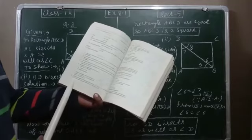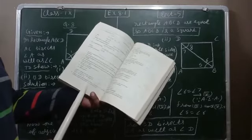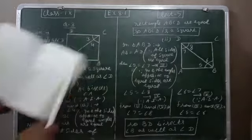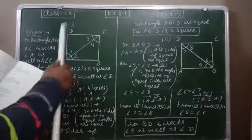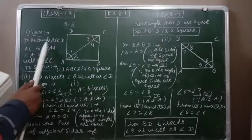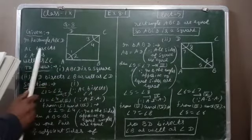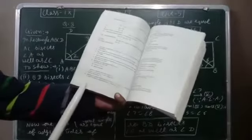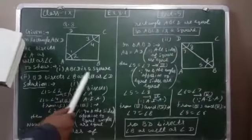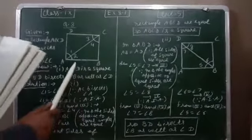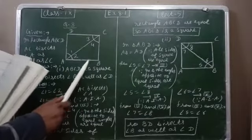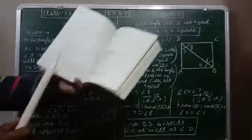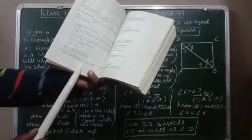ABCD is a rectangle in which diagonal AC bisects angle A as well as angle C. Let us draw a figure: in rectangle ABCD, AC bisects angle A as well as angle C. The first part we want to prove is that ABCD is a square — meaning if one pair of adjacent sides of a rectangle are equal, then we can say it is a square.